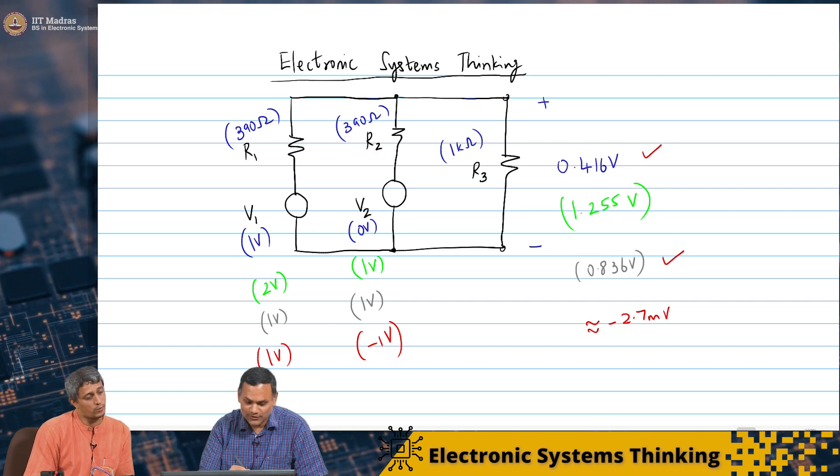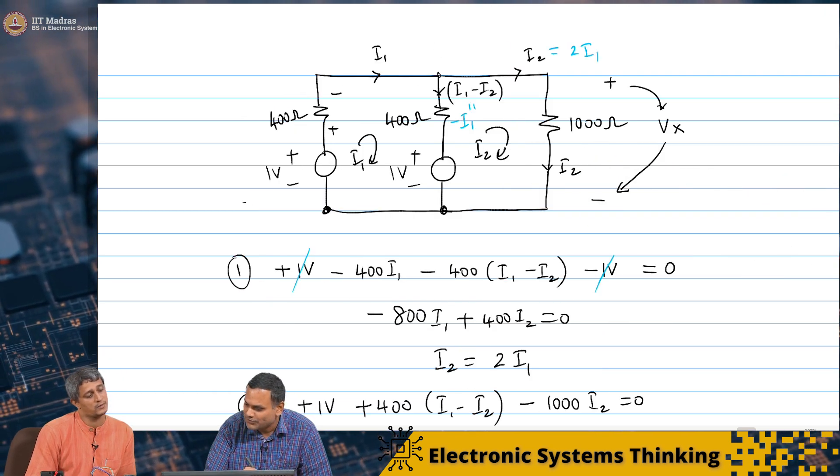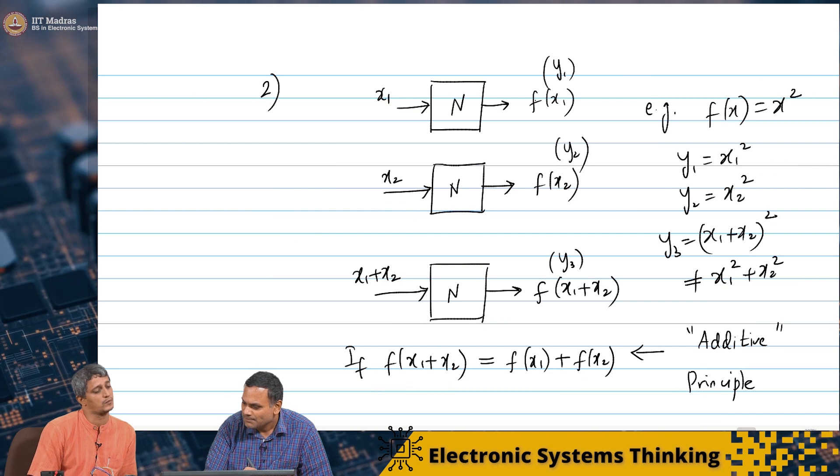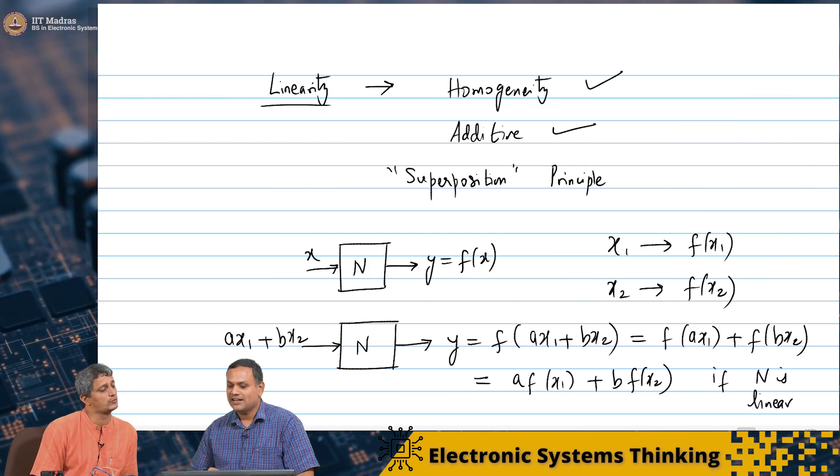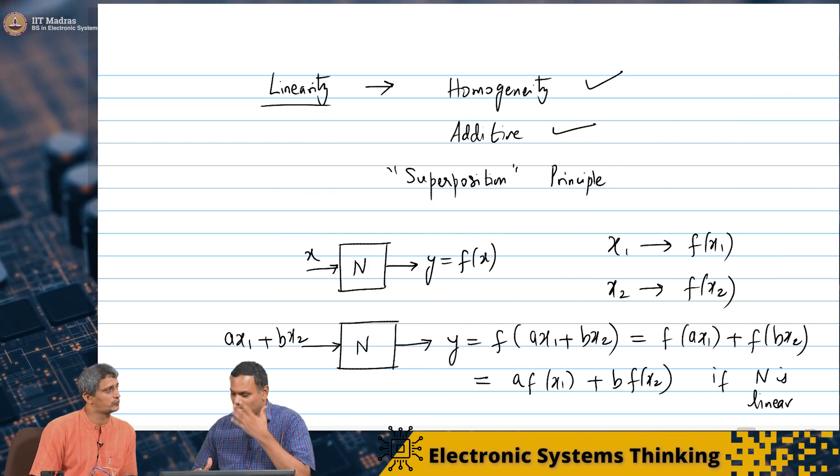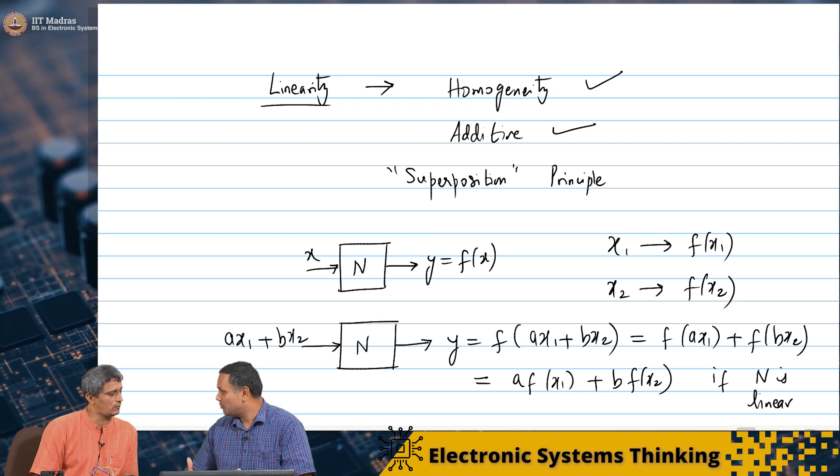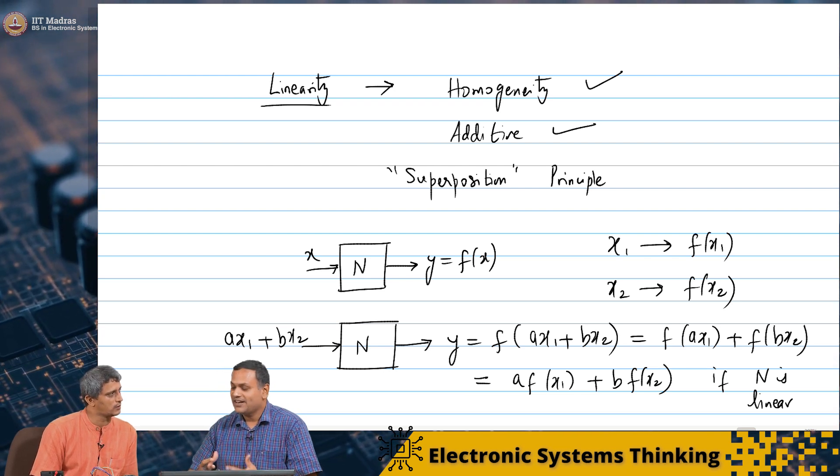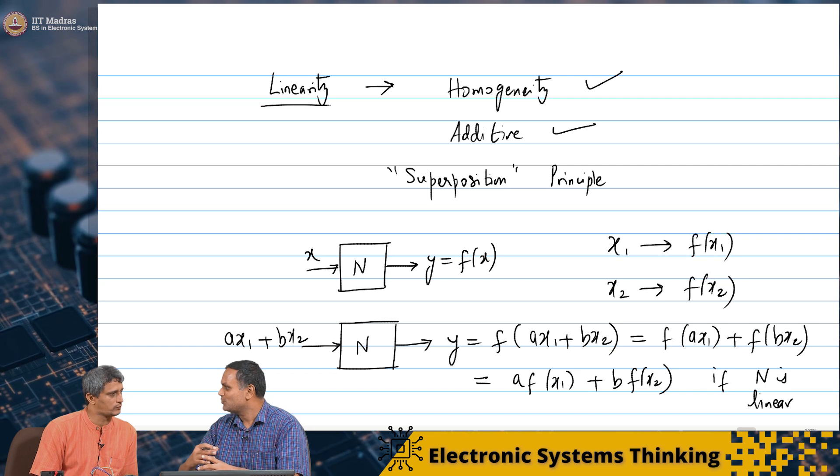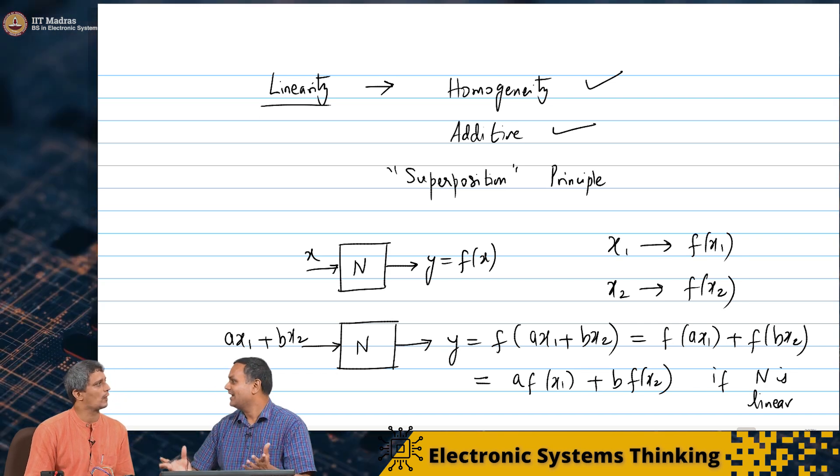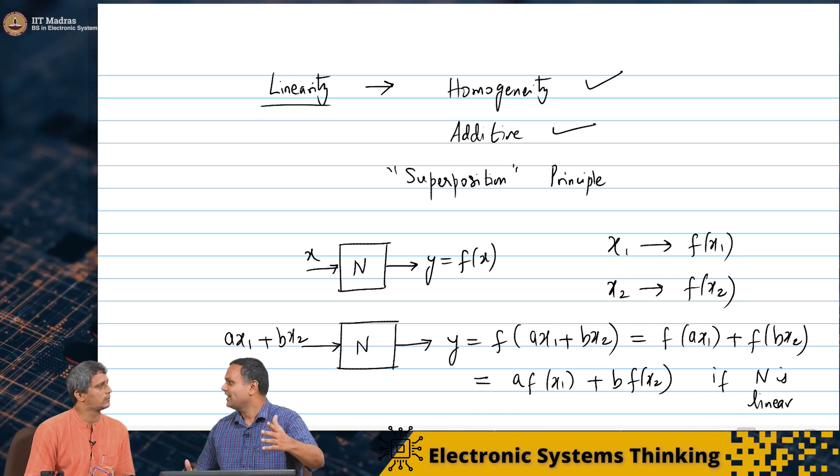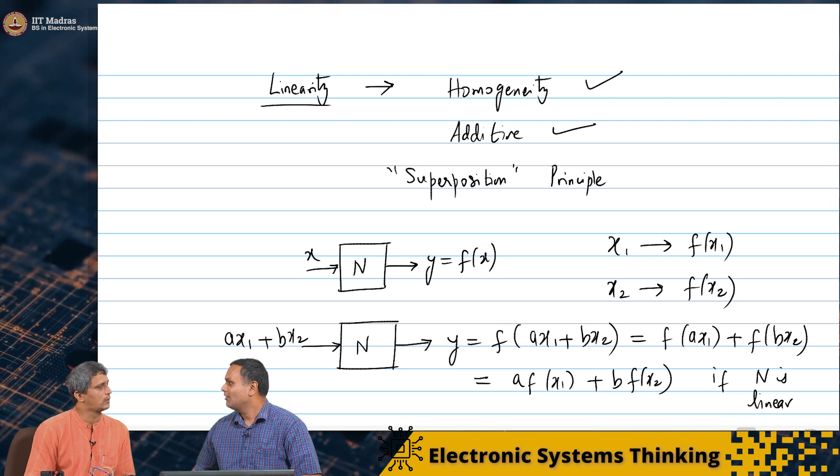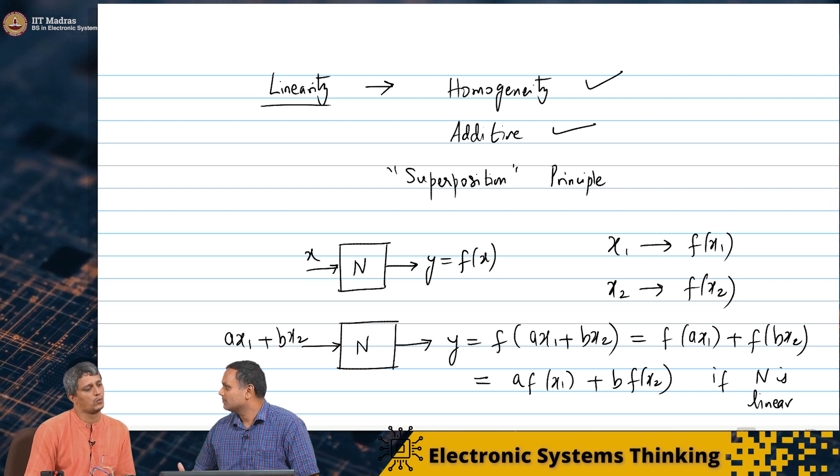That is right. So that is exactly what this superposition principle says. So what this is telling you is that you can now, if you have many inputs, if the network is linear, you can just take each one separately and analyze the network. And the final one will be just a combination of all of the individual outputs.